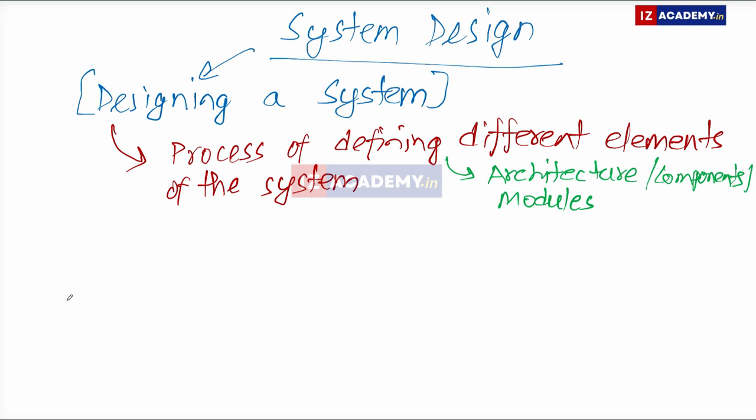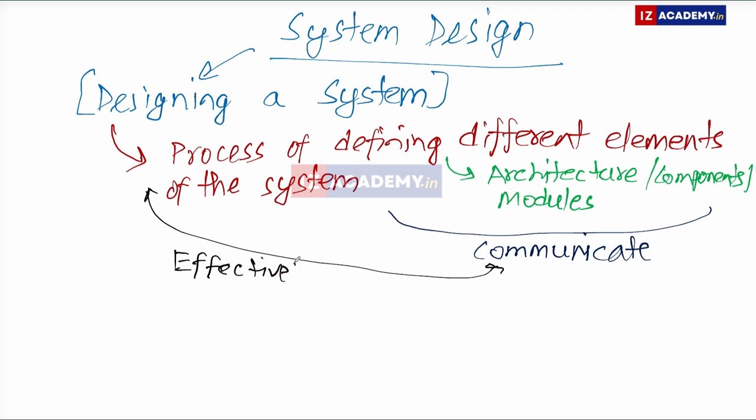And we also have to ensure that all these different elements should be able to communicate well. And why do we need that? Because if they are not communicating, how will we be able to share the data? How will the data flow? So why are we designing this system? Why are we ensuring that they can communicate? We are doing so so that effectively data will flow through the system.